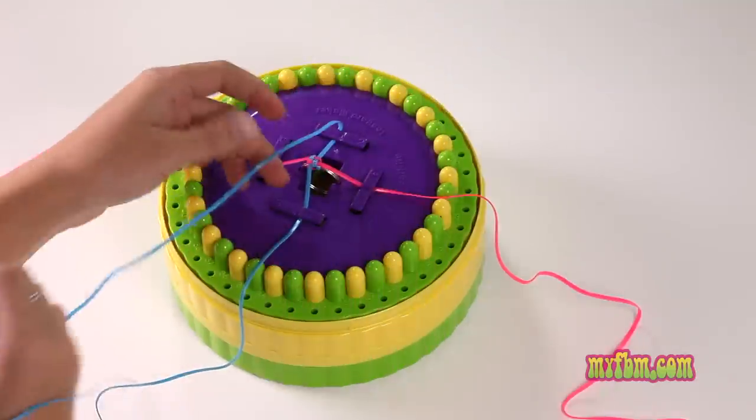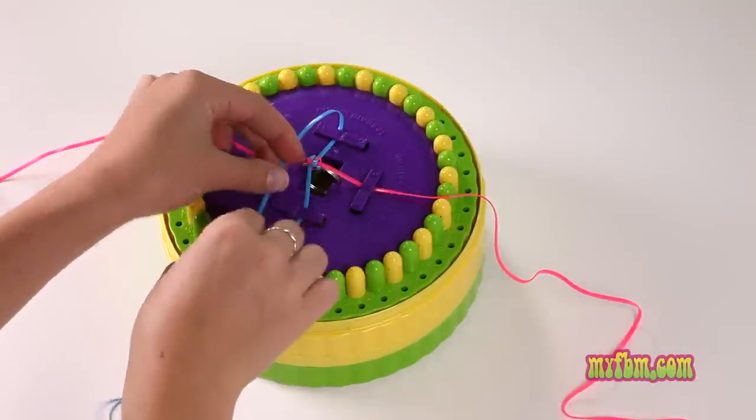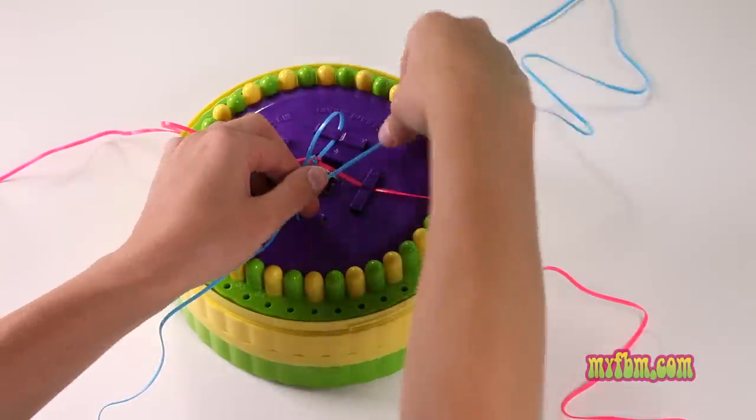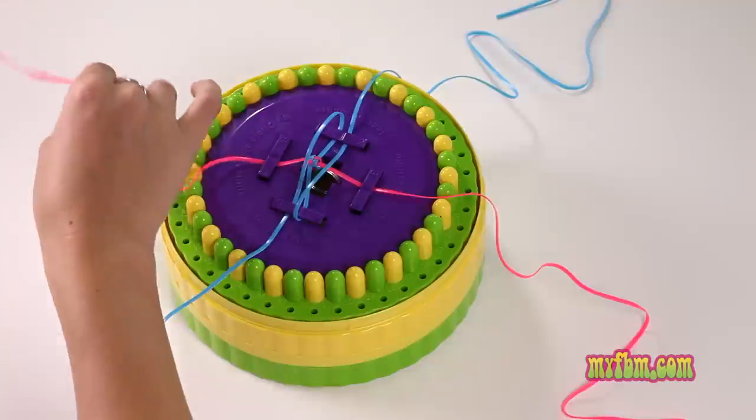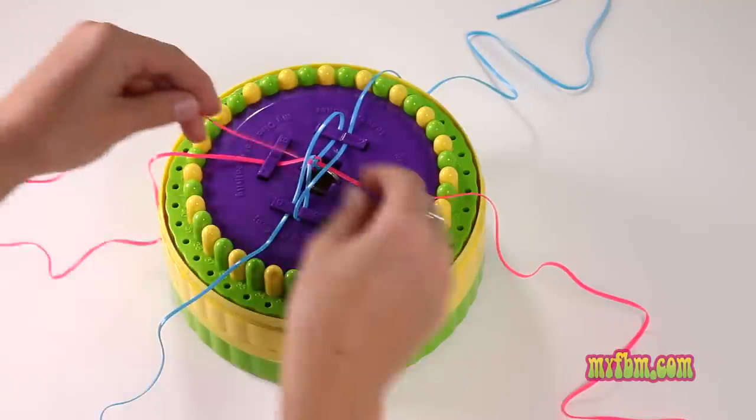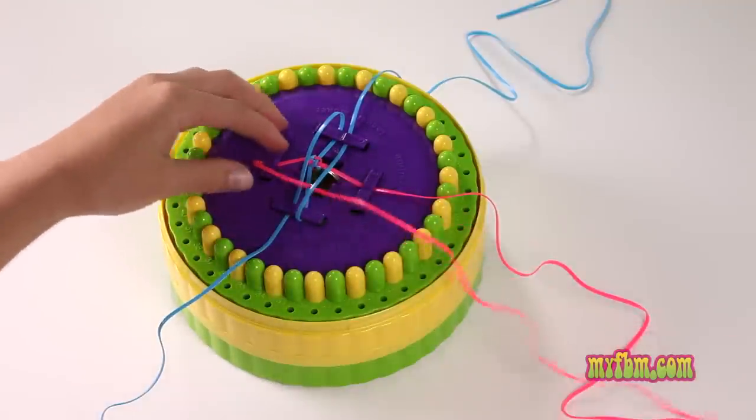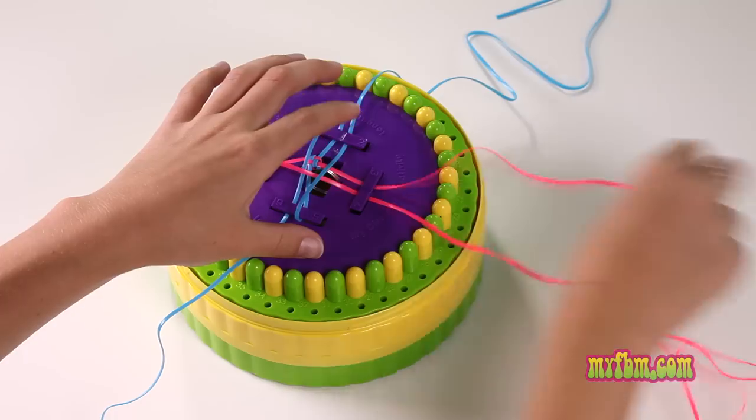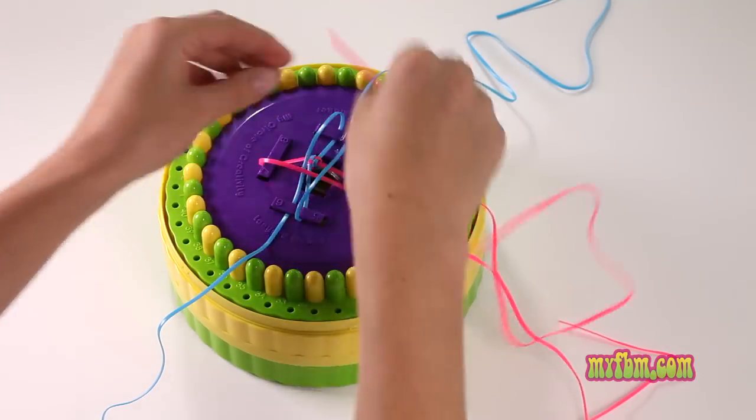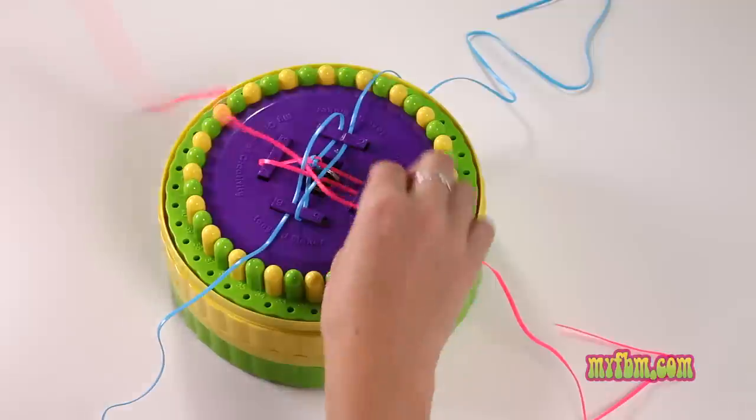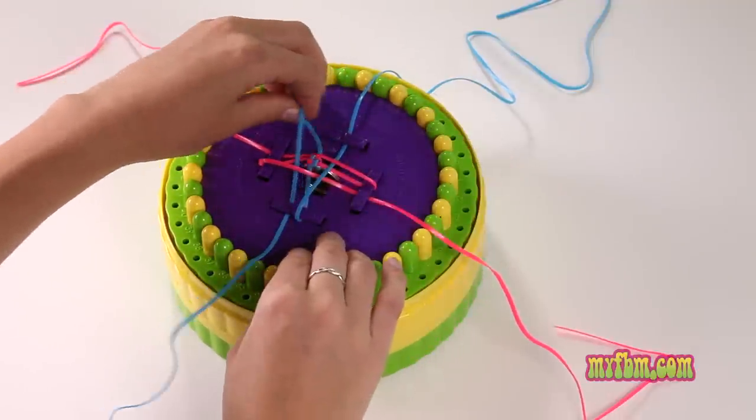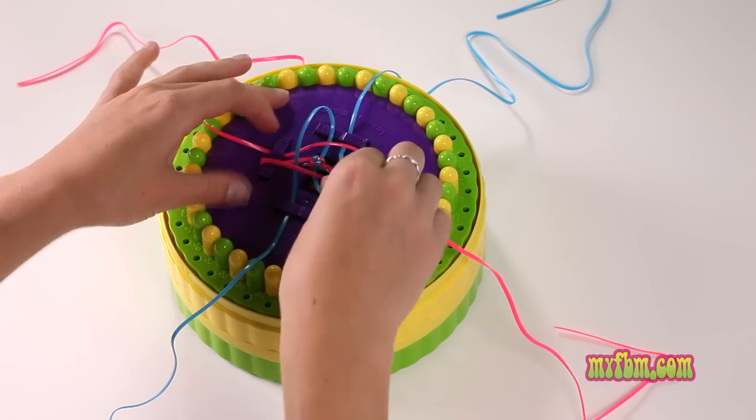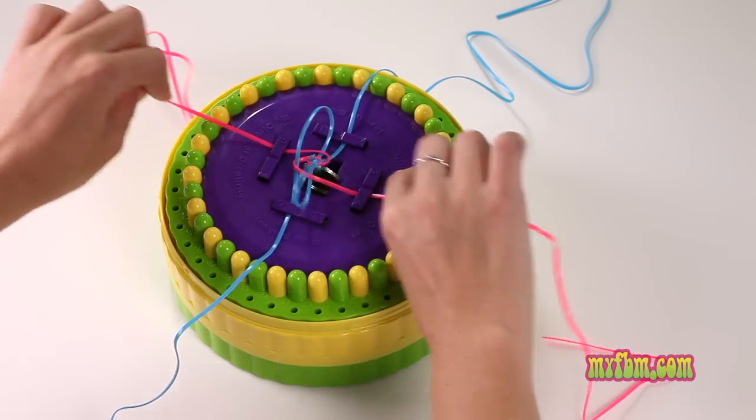Fold the 1 to the 6, the 5 to the 2. Take the 7, go over under to the 4, and the 3 over under to the 8. Release your loops on 1, 3, 5, and 7, and pull the strings tight.